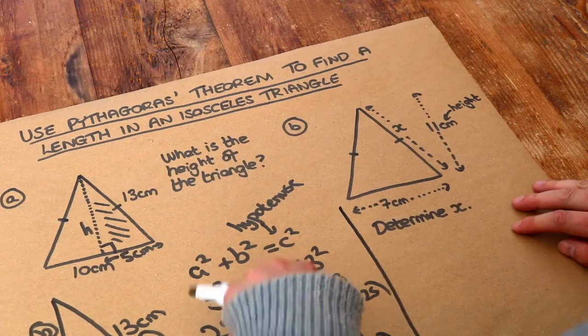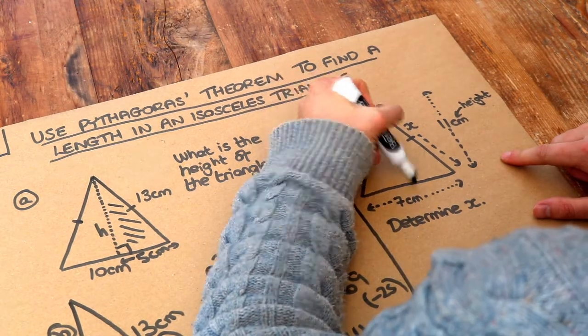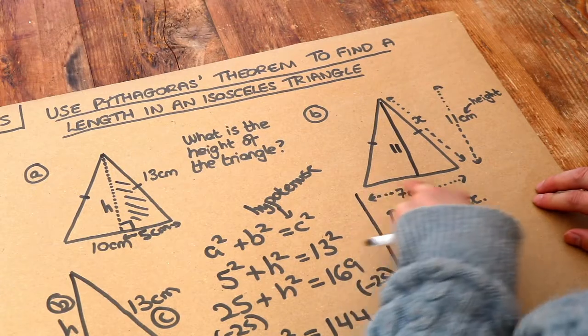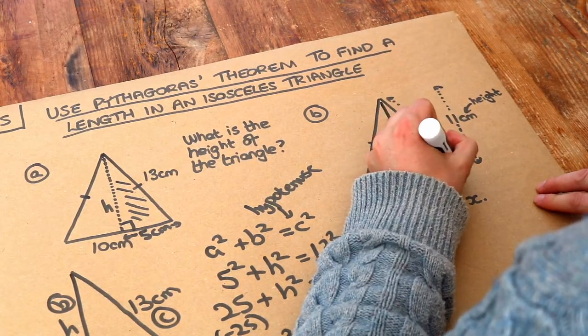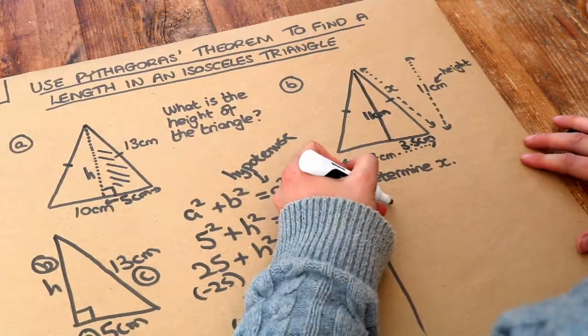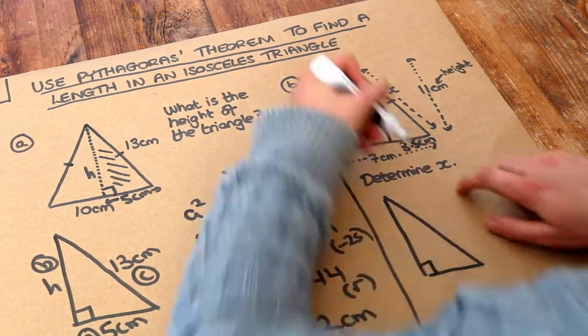What about this second one? We're told the height is 11, and the bottom length is 7. If we split that in half again, that's 3.5 centimeters here, and we want to find the hypotenuse x. So if I draw that triangle out separately, we've got 3.5 at the bottom, 11 going up the height, and we want to find that slant height.